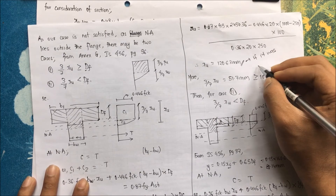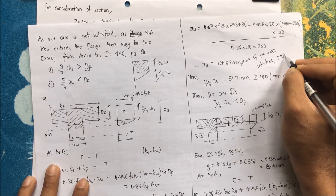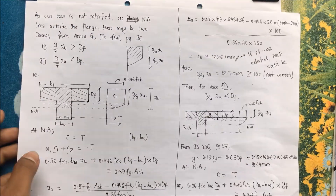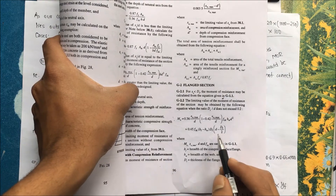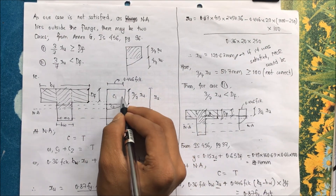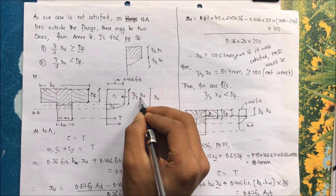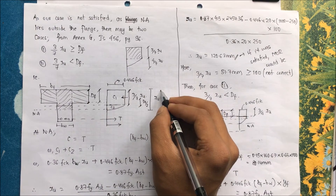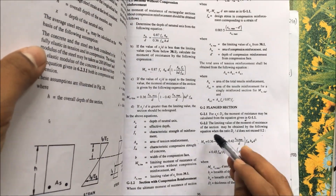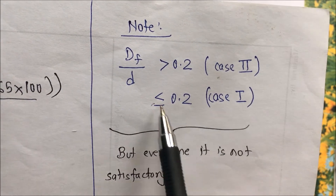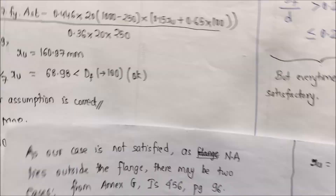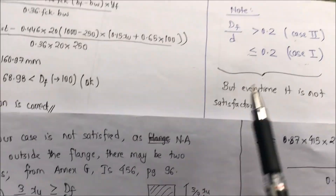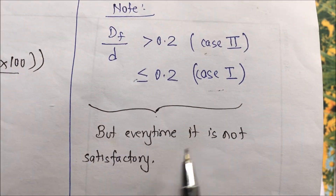If Case 1 had been satisfied, the moment would have been calculated differently. Instead of YF, we would have used DF, and the centroidal distance would be DF/2, giving a lever arm of D − DF/2. To summarize: if DF/D exceeds 0.2, use Case 2; if DF/D is less than or equal to 0.2, use Case 1. But it is not always necessary that the first case is satisfied, as shown in this video. Thank you — please like, subscribe, and comment.